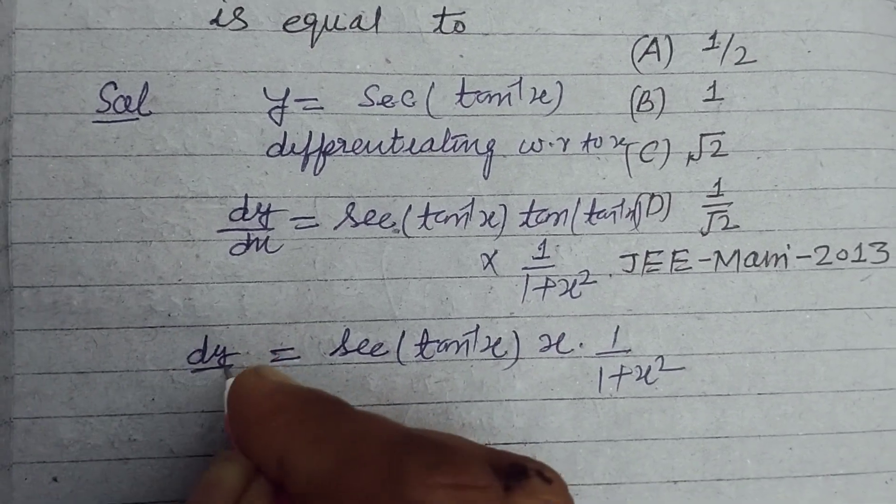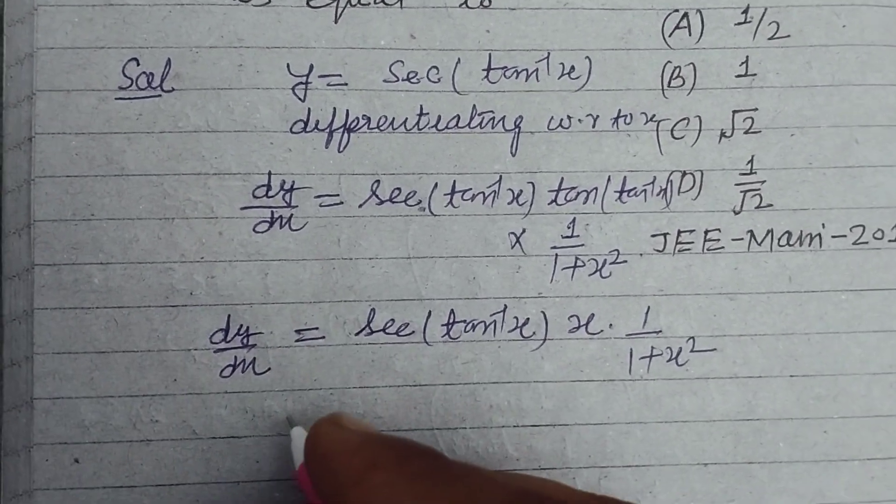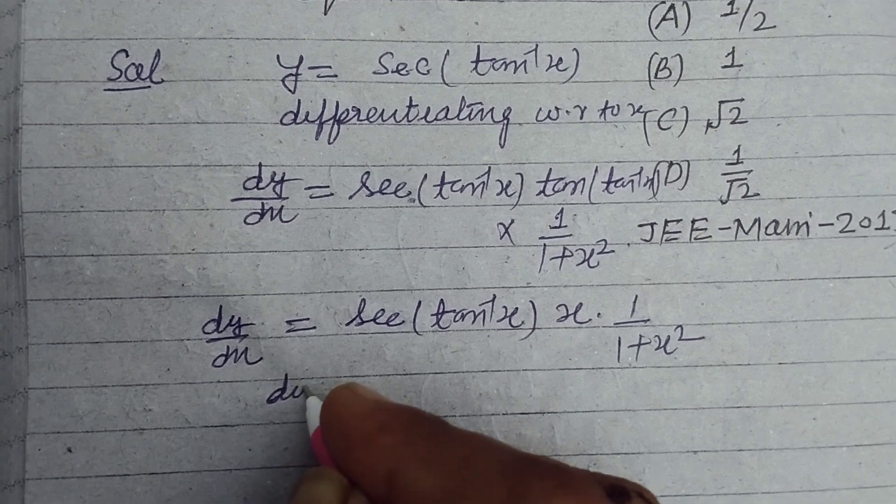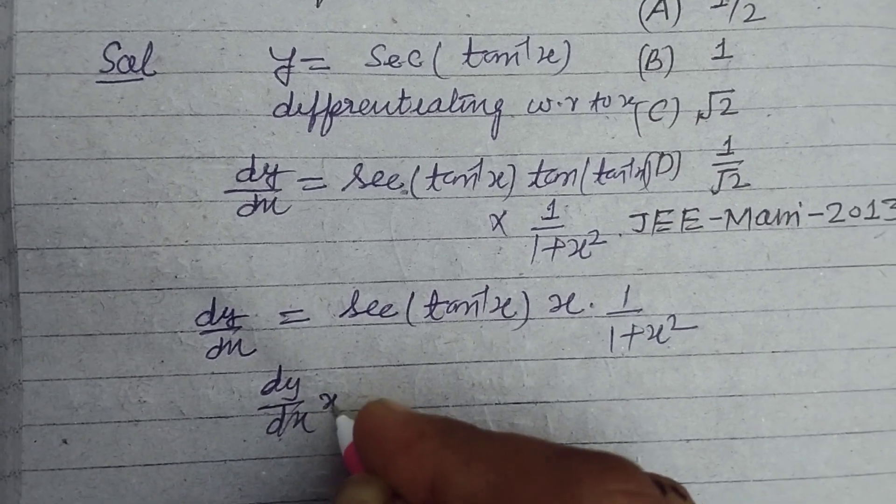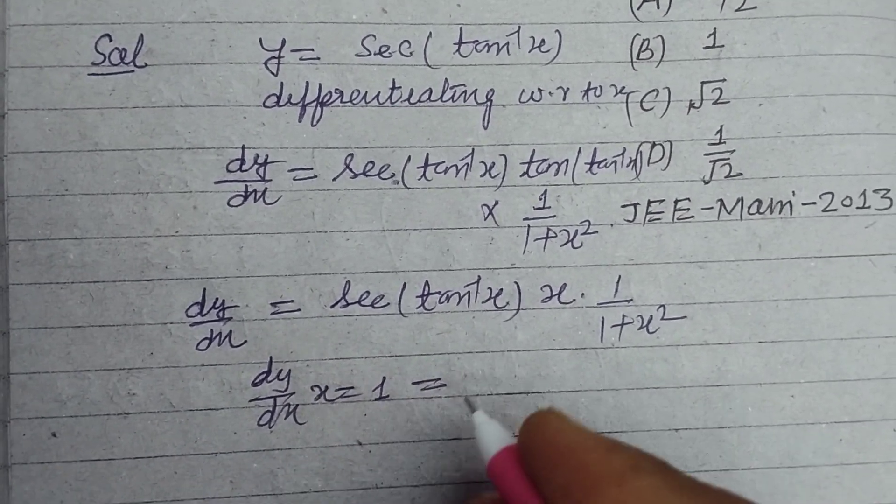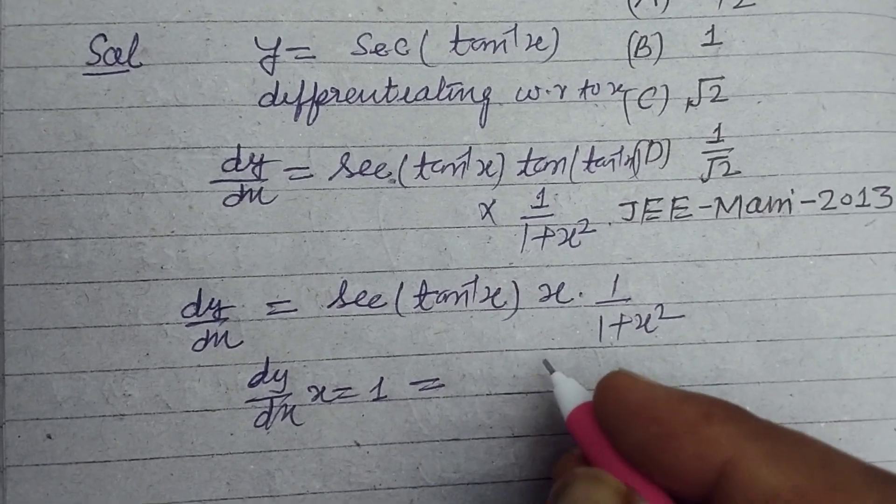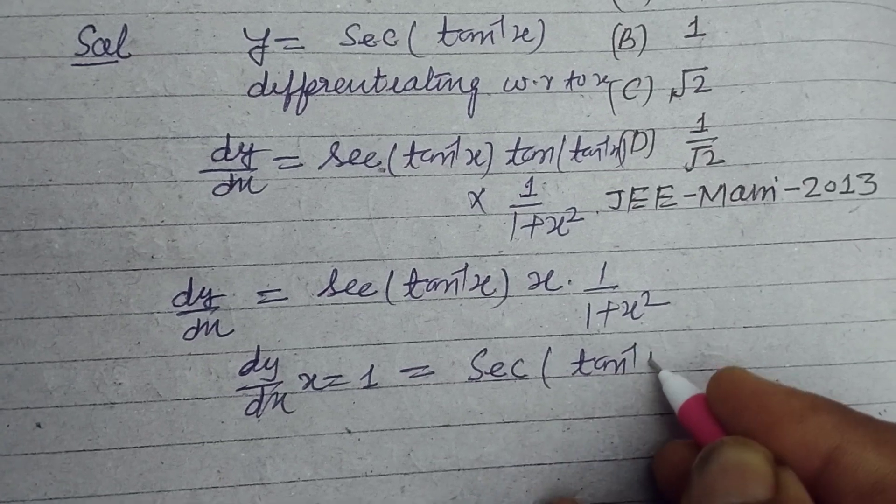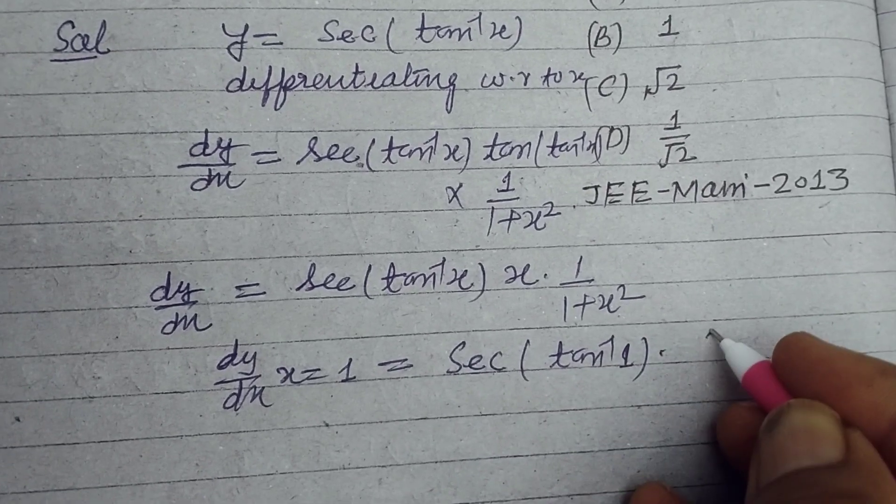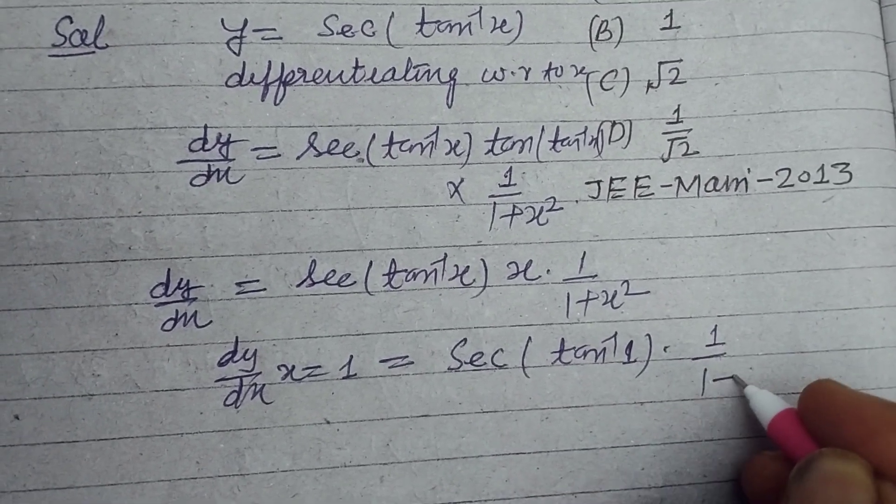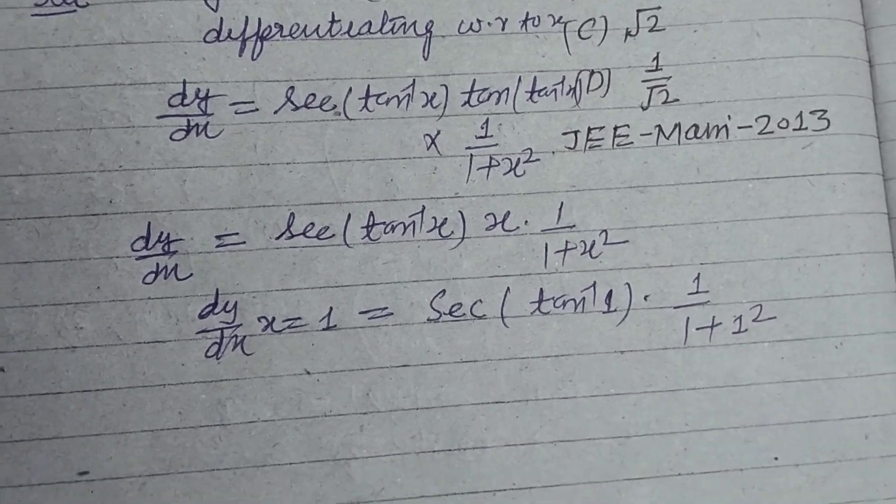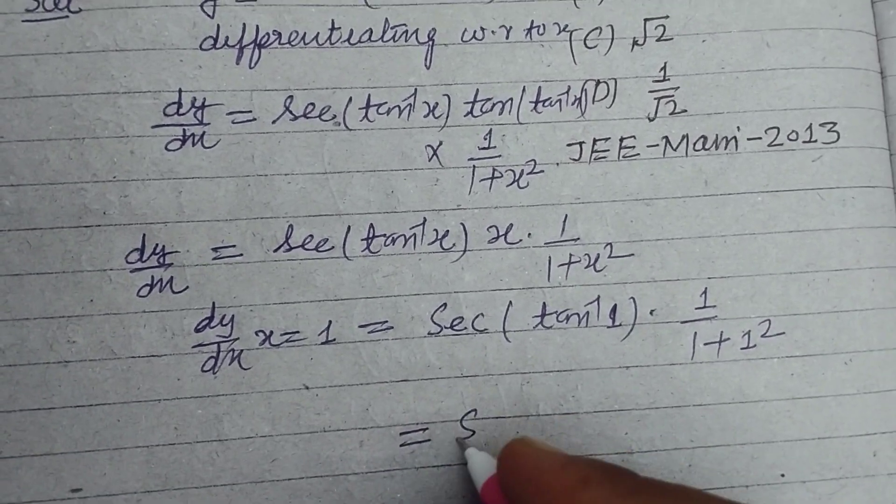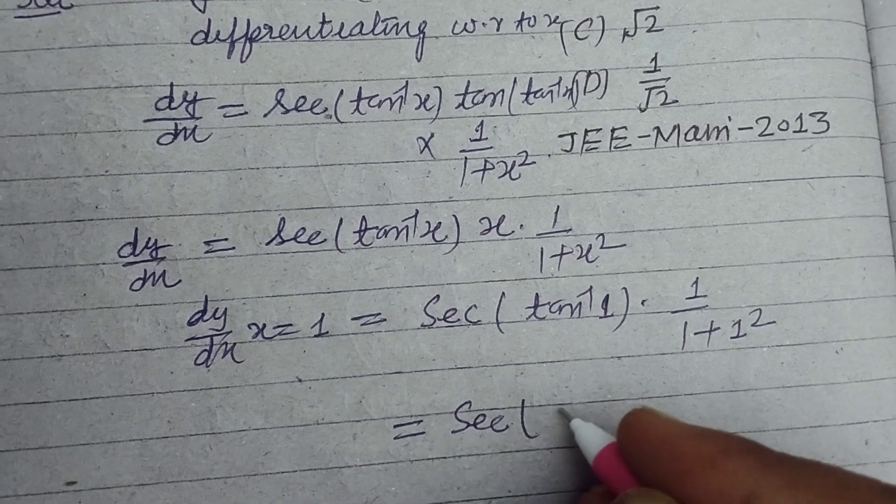This is dy/dx. dy/dx at x equals 1, so put x equals 1 where x is present. So sec(tan inverse 1) into 1 upon 1 whole squared, and this is sec(tan inverse 1) is π by 4.